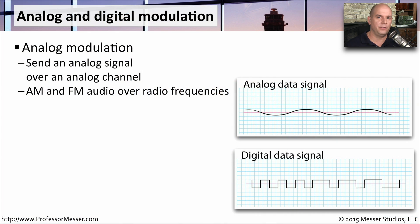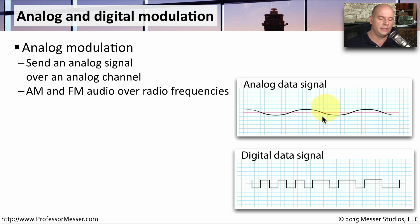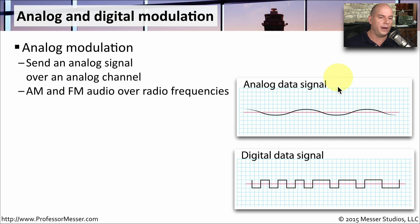When we're sending a signal over the network, whether it's on a copper cable, a fiber connection, or over wireless, we are either sending an analog signal or a digital signal. An analog signal is one that uses this data signal — you can see the wave of the analog signal being sent. We would be sending this over what we call an analog channel, such as radio frequencies. A good example of this would be AM and FM radio over those radio frequencies.